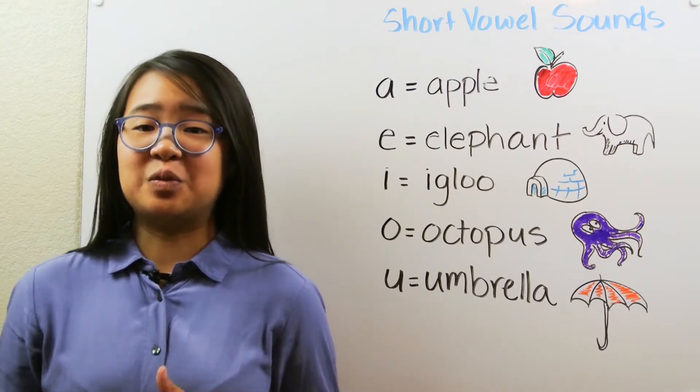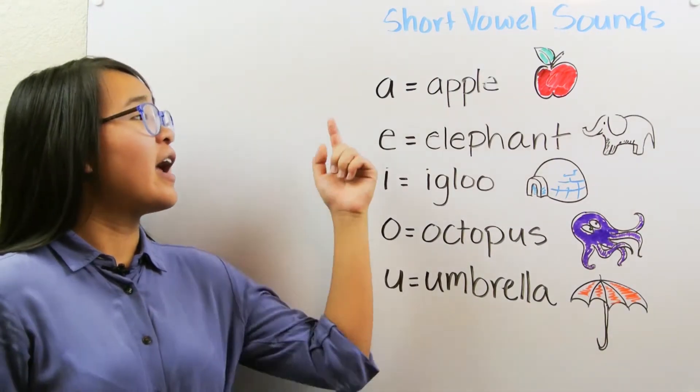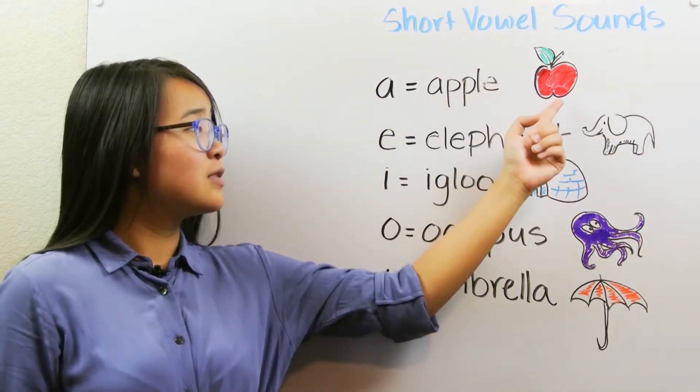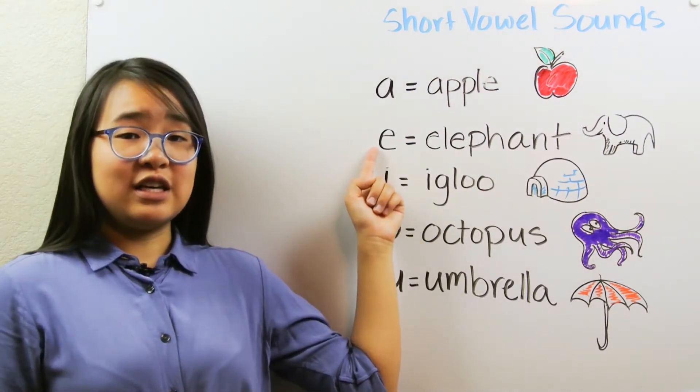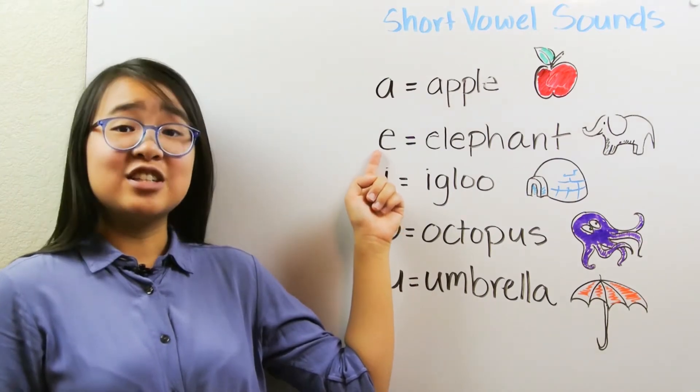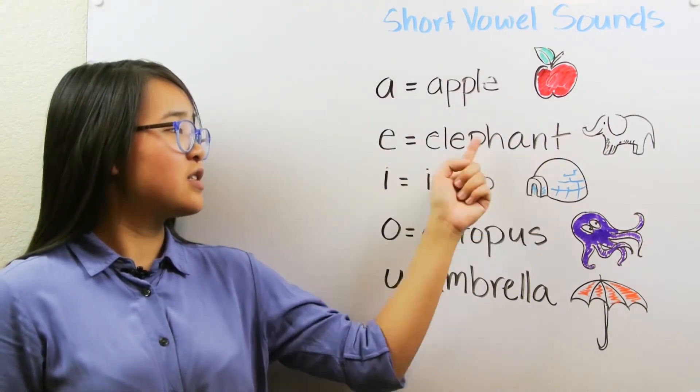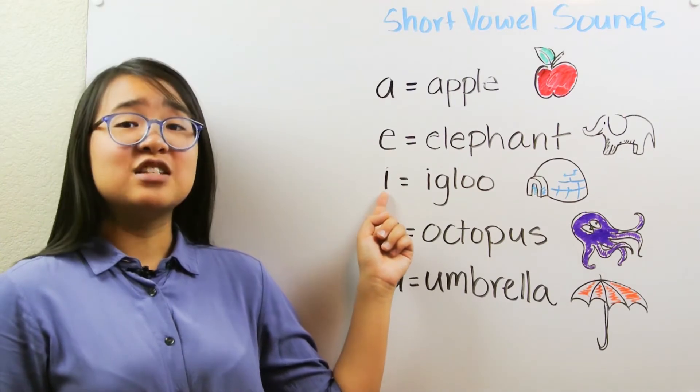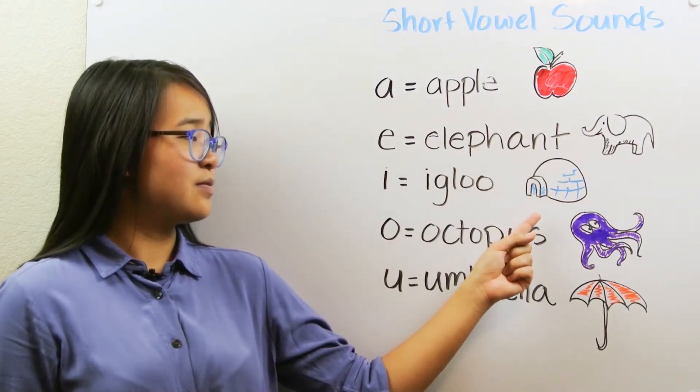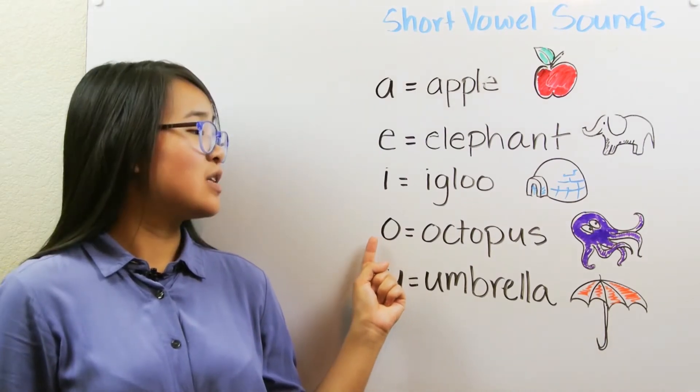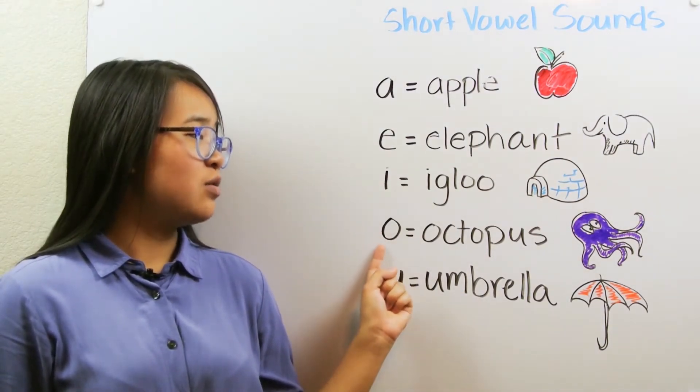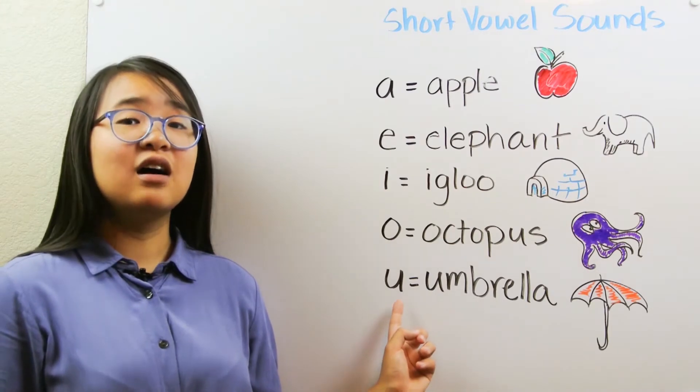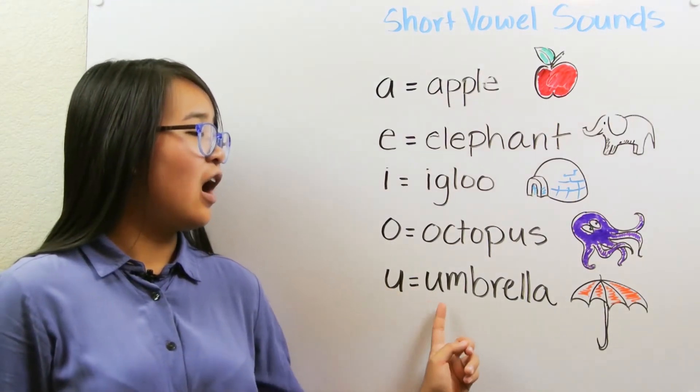Short vowel sounds are very different from long vowels. The short letter A makes an A sound, just like in the word apple. The short letter E makes the E sound, just like in the word elephant. The short letter I makes the I sound, just like in the word igloo. The short letter O makes the O sound, just like in the word octopus. The short letter U makes the U sound, just like in the word umbrella.